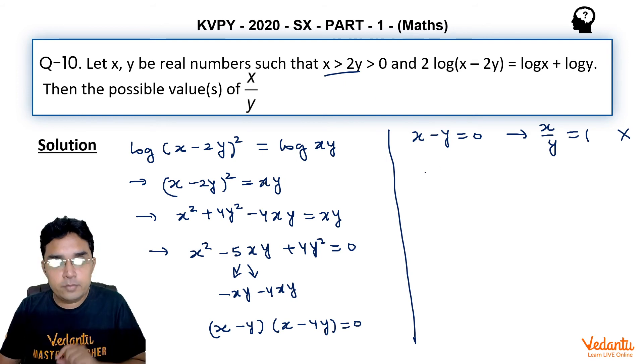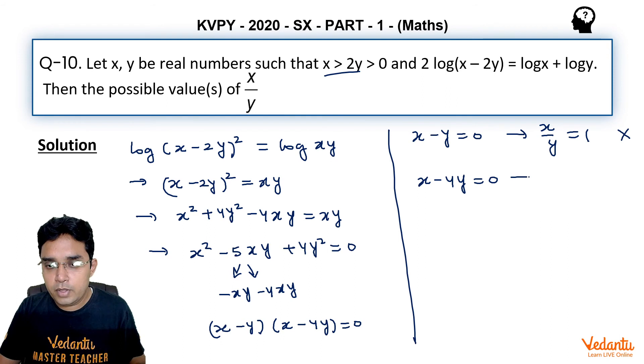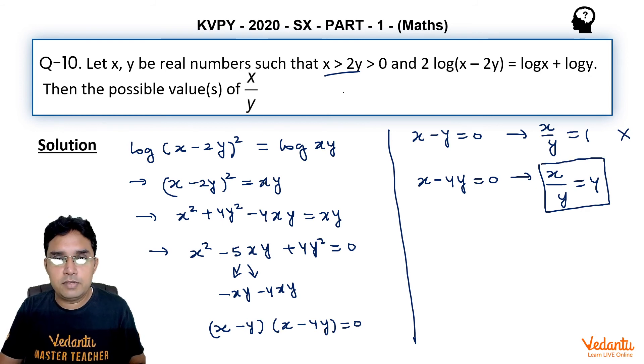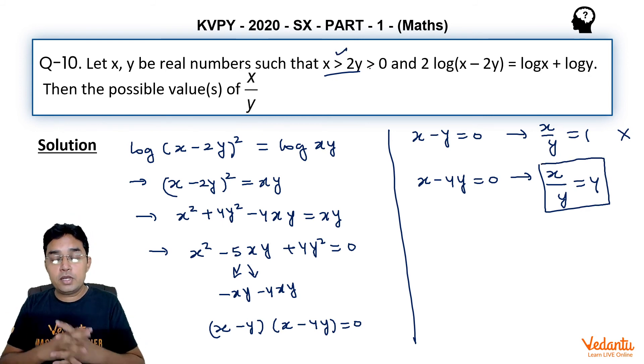From the second factor, we get x - 4y = 0, which gives us x/y = 4. This satisfies all the conditions given in the question.